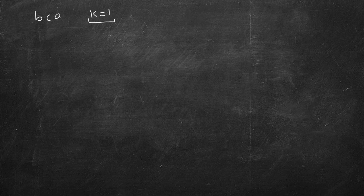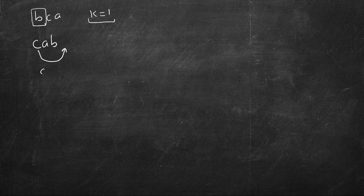With k=1 you can only pick the very first letter. For 'bca', moving b to the end gives 'cab', then moving c gives 'abc' — it's sorted! But let's take another combination.